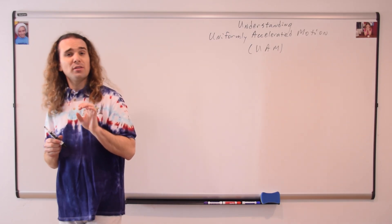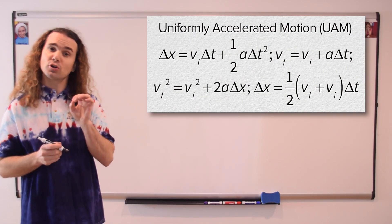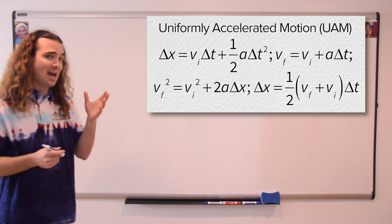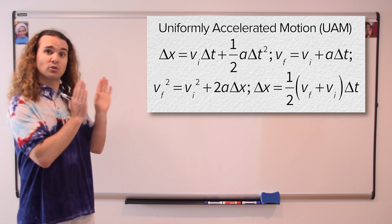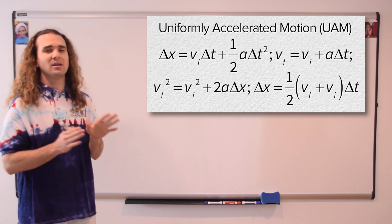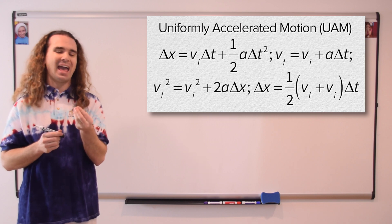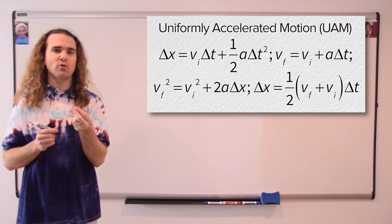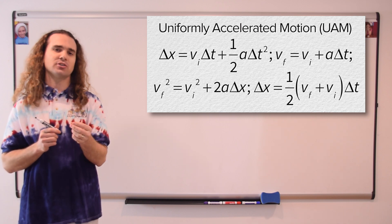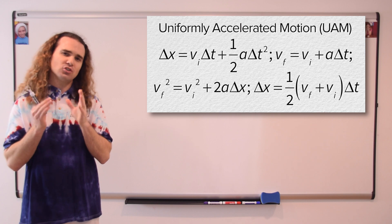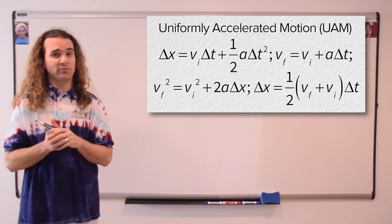We have already begun working with uniformly accelerated motion, or UAM, and we have our four UAM equations — those are great and we're going to use them a lot. However, today I want to try to understand what it means to have a uniform acceleration, what it means to have a constant acceleration. So let's start with the equation for acceleration.